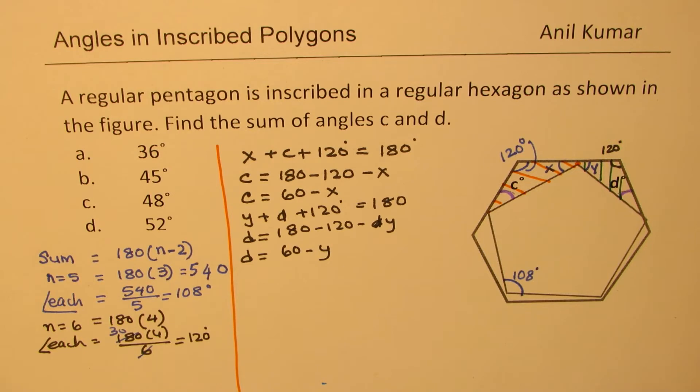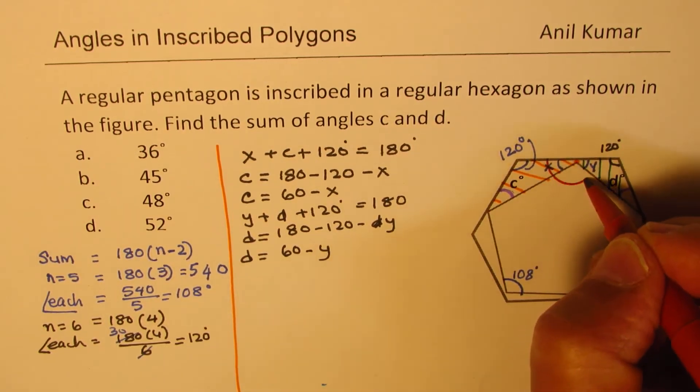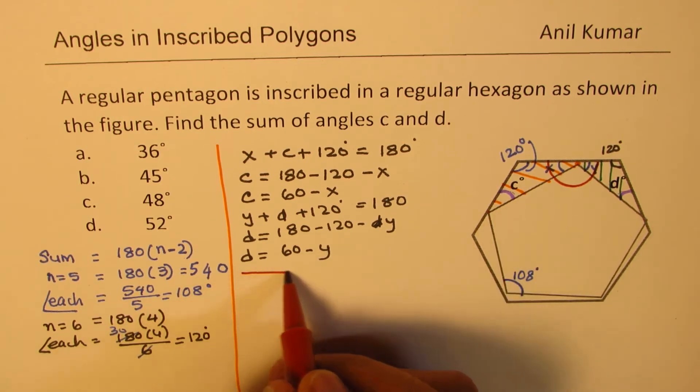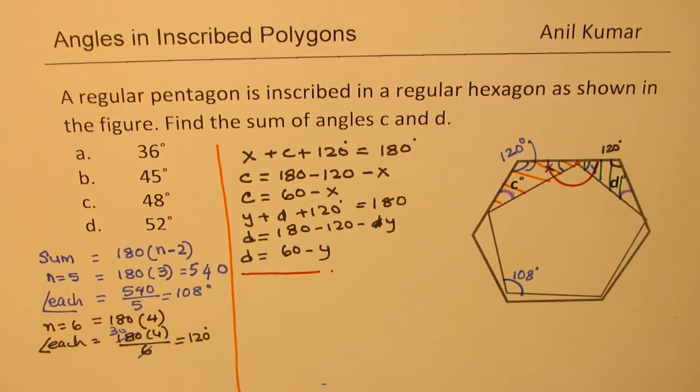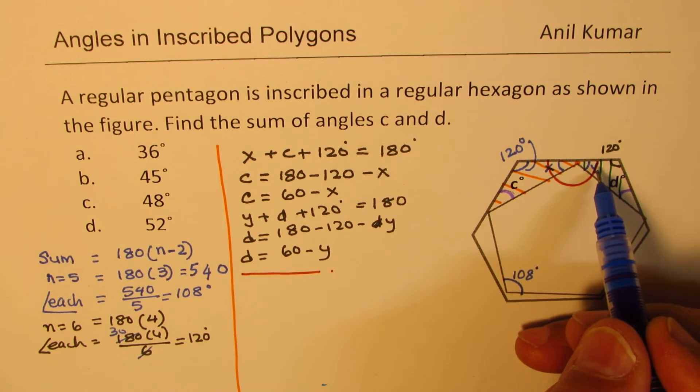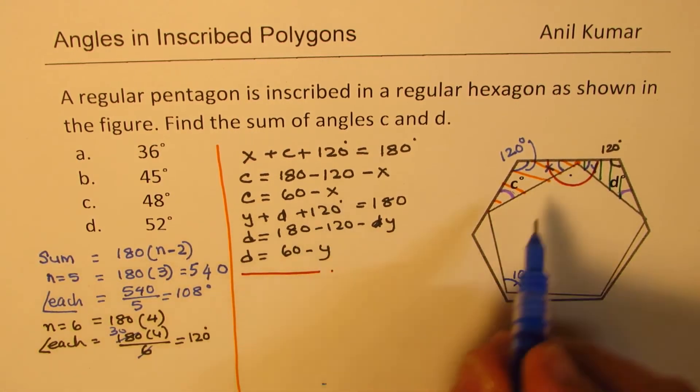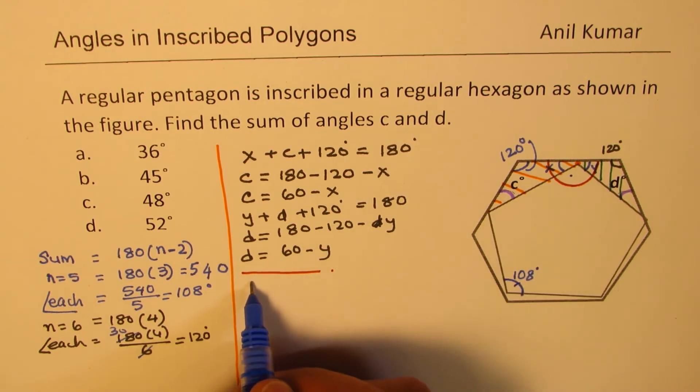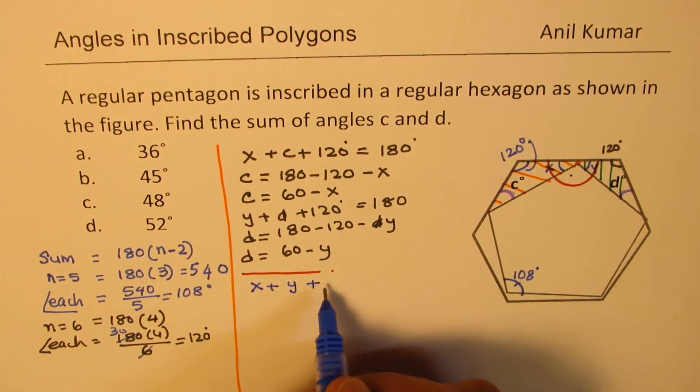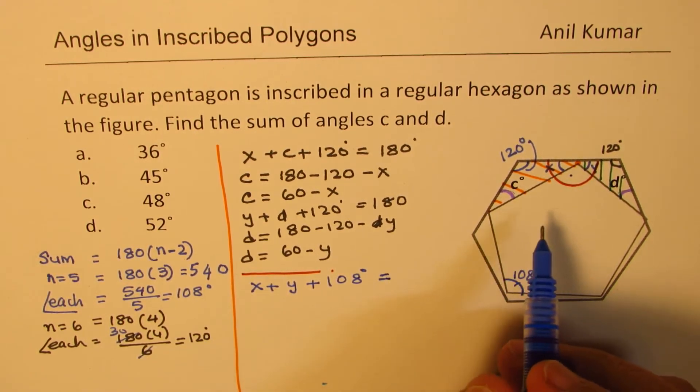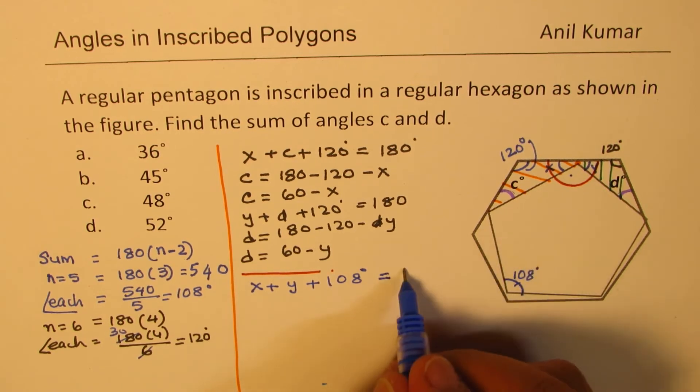Now if you look into the angles at this point, now that sum should also be 180 degrees. It's a straight line, correct? So in that case, what happens? So we get X plus Y plus this angle, which is 108 here. So in that case, we get that X plus Y plus 108 degrees is equal to 180 degrees.